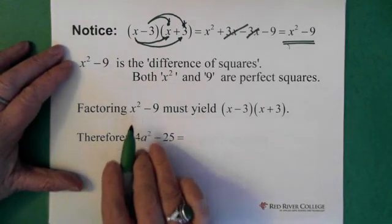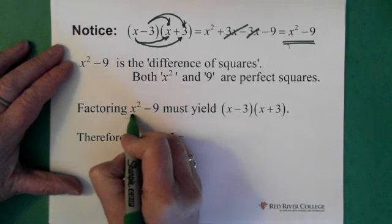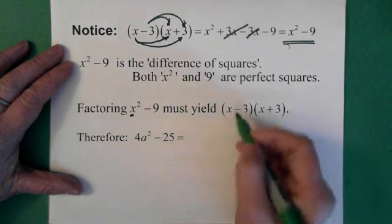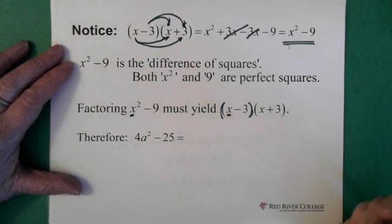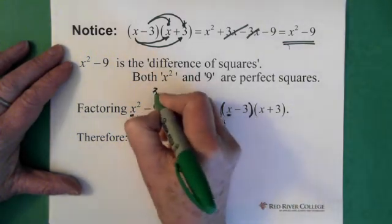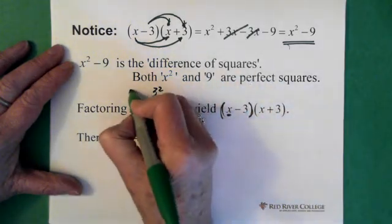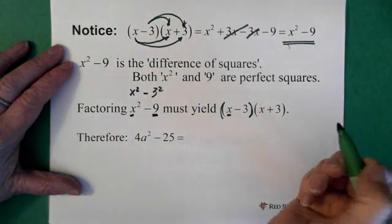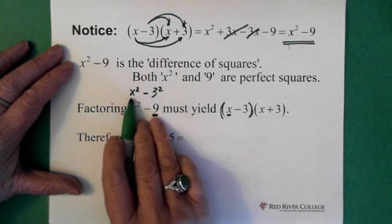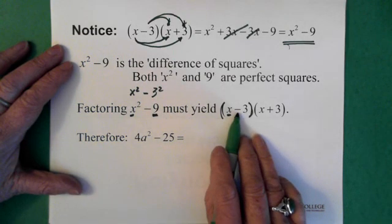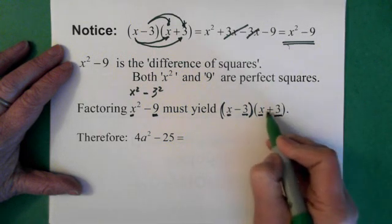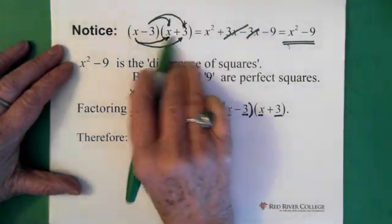When we factor the difference of squares, we ask ourselves: what here is squared? It's the x. That has to go into this bracket — that x. We also ask ourselves what here is squared — it's a 3. So we have a 3 squared here. Reminding ourselves that we have x squared minus 3 squared: x is what's squared in the first term, and 3 is what's squared in the second. Those are what go into the brackets. In the first bracket there's a subtraction sign, and in the second bracket it's the same thing — x and 3 — but with a plus sign.